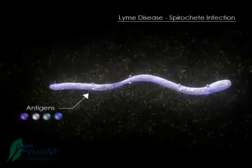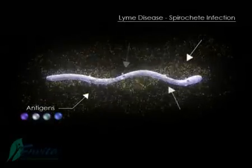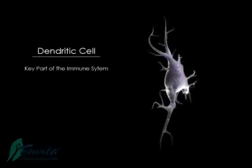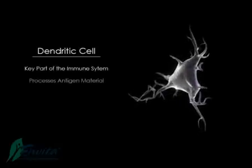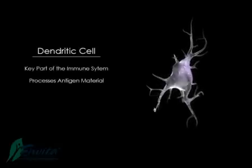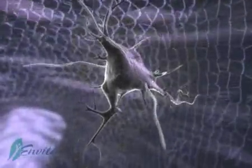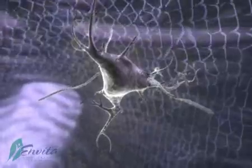The spirochete contains antigens, and the antigens are like fingerprints, which identify this infection to the body's immune system. The dendritic cell is a key part of the immune system. One of the major functions of the dendritic cell is to process the antigen and present it to other parts of the immune system. This is why the dendritic cell is called the antigen-presenting cell. Once the spirochete enters the human body, it comes into contact with the dendritic cell, and the spirochete rubs or displaces the antigens onto the dendritic cell. Then the dendritic cell begins to process the antigen of Lyme disease for the other parts of the immune system to recognize it.